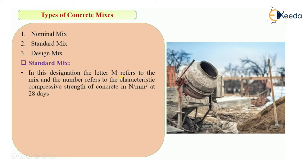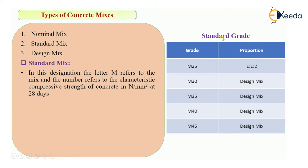In the designation, 'M' refers to the mix and the number refers to the characteristic compressive strength of concrete in N/mm² at 28 days. For example, M20 means the mix will give a compressive strength of 20 N/mm² after 28 days. Some standard grades: M25 has proportion 1:1:2. For M30 and above — M35, M40, M45 — you have to design the mix by concrete mix design.